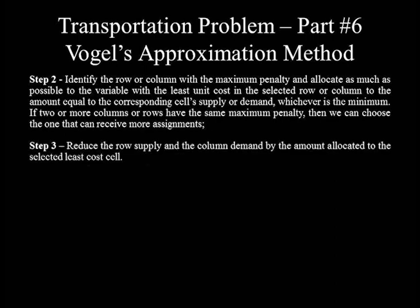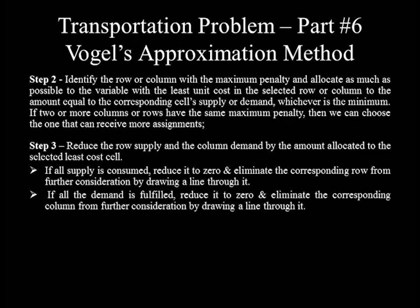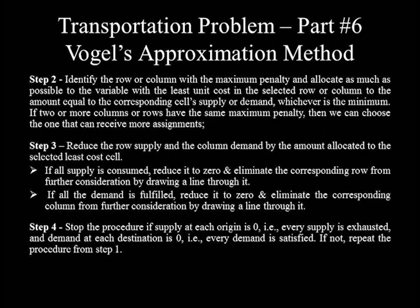Step 3: Reduce row supply and column demand by the amount allocated to the selected least cost cell. After such reduction, if all the supply is consumed, reduce it to zero and eliminate the corresponding row from further consideration by drawing a line through it. Similarly, if all the demand is fulfilled, reduce it to zero and eliminate the corresponding column by drawing a line through it. Step 4: Stop the procedure if the supply at each origin is zero and the demand at each destination is zero. If not, repeat the procedure from step 1.